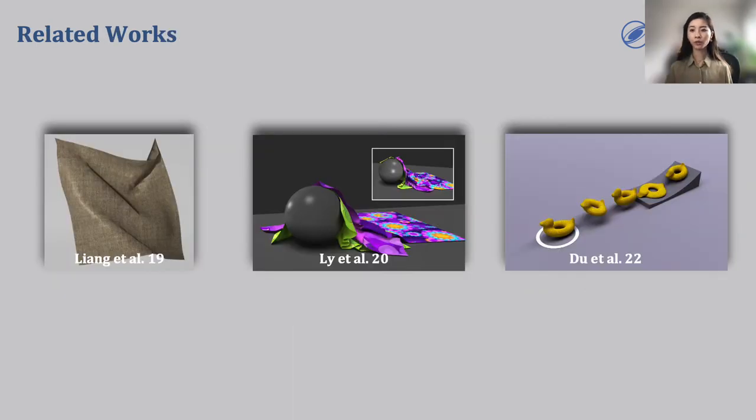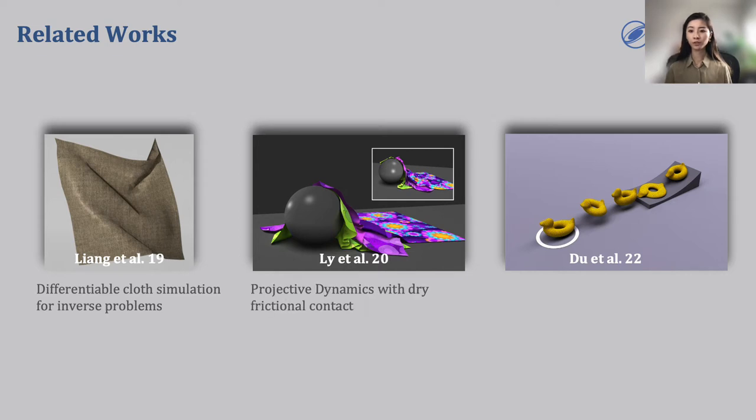The closest to our work is that of Liang and colleagues, which presents a differentiable cloth simulator. However, the proposed framework uses a non-physics-based contact model and uses Newton's method and directly performs backpropagation using adjoint method, making the whole framework very slow. The forward simulation model in our differentiable simulation framework uses the work proposed by Li and colleagues, which presents a projective dynamics-based simulator to support dry frictional contact. Lastly, Du and colleagues present a fast PD-based soft-body differentiable simulator, which directly inspired our work. However, comparing to our method, the framework is limited in that it doesn't model frictional contact.